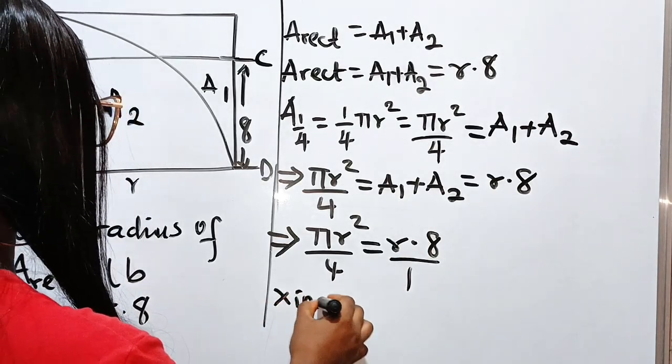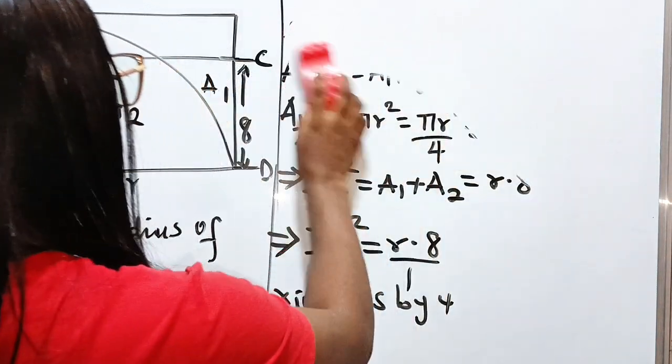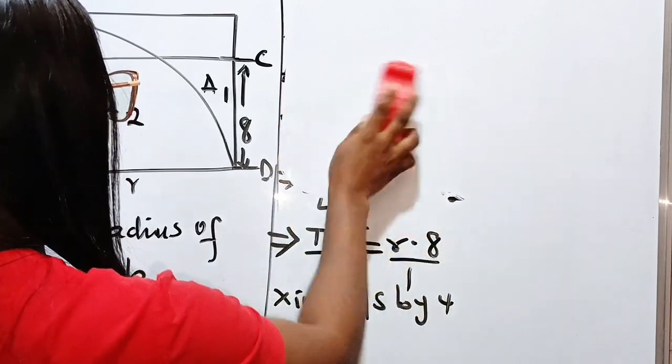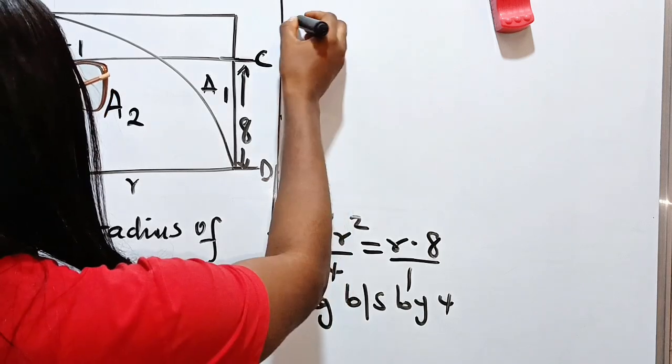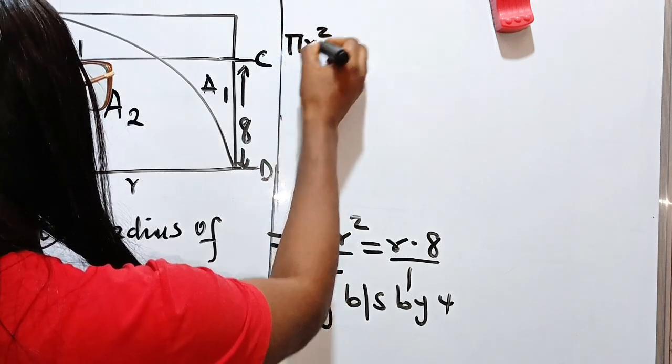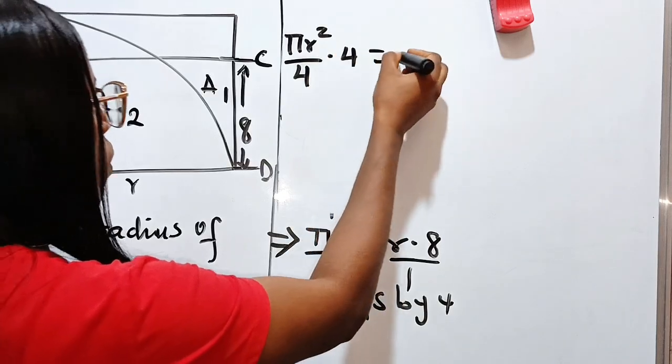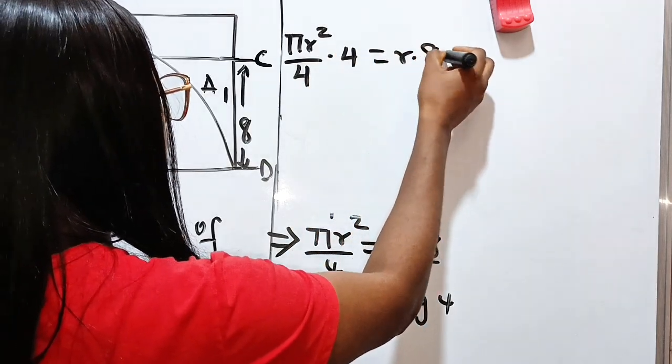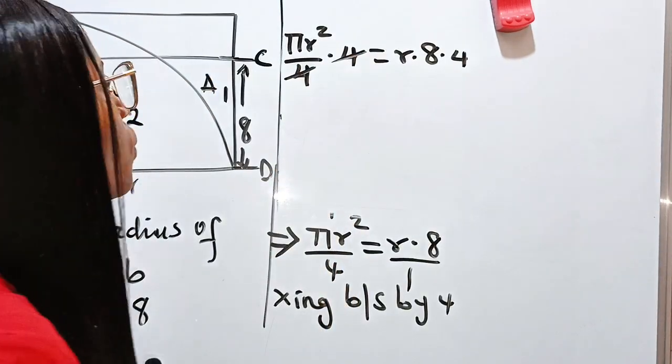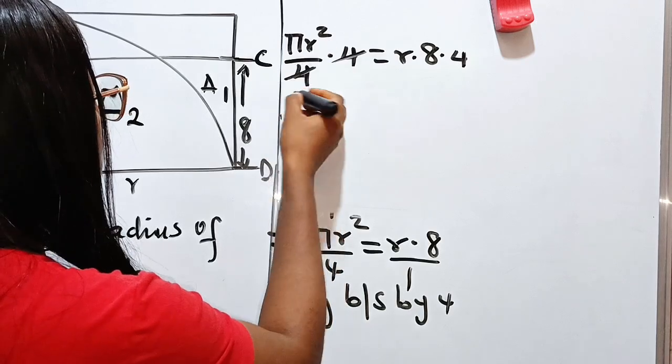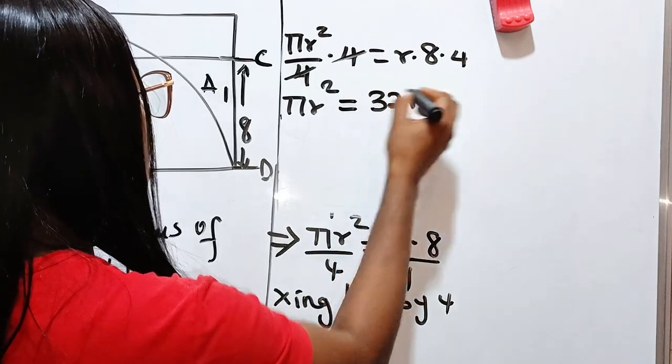Now, multiplying both sides by 4, we will have pi r squared divided by 4 multiplied by 4. So 4 divides itself, we have 1. 1 times this is the same thing, pi r squared is equal to 32 r.